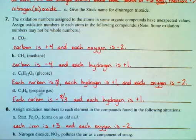For part A, carbon is +4 and each oxygen is -2. For part B, each carbon is -4 and each hydrogen is +1. If that throws you off, I'll give you a hint.